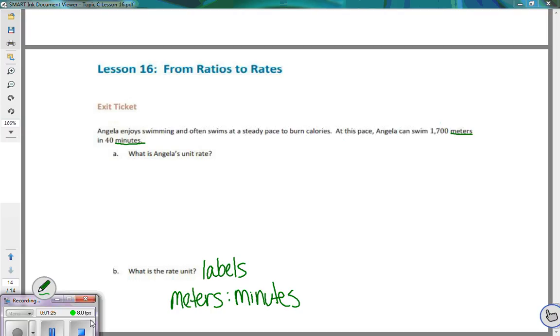1,700 meters to 40 minutes. To find the unit rate, it means per one, so we want to get per one minute. In order to get per one minute, the directions that we were given in class that will work every single time is if you take the top part, your 1,700 meters, and divide it by the second part of your rate, your 40 minutes.